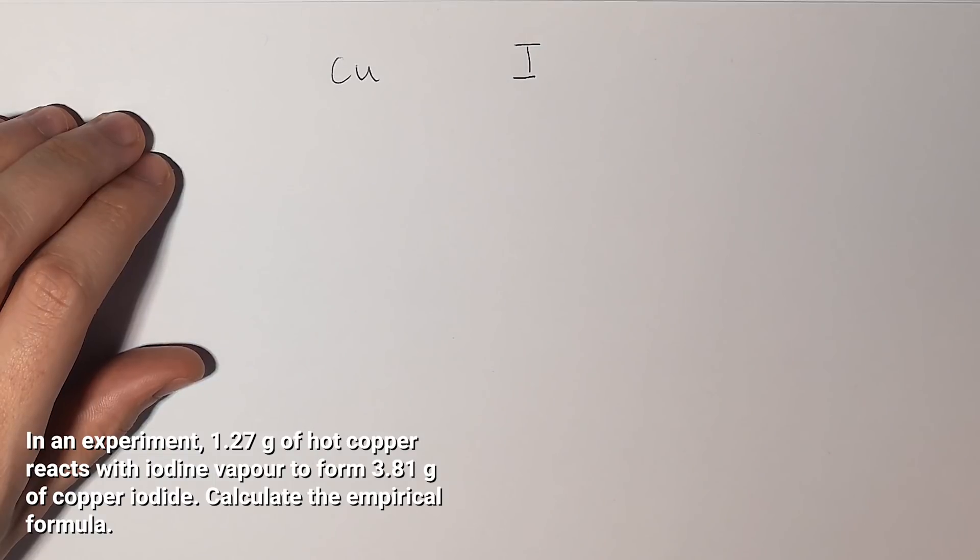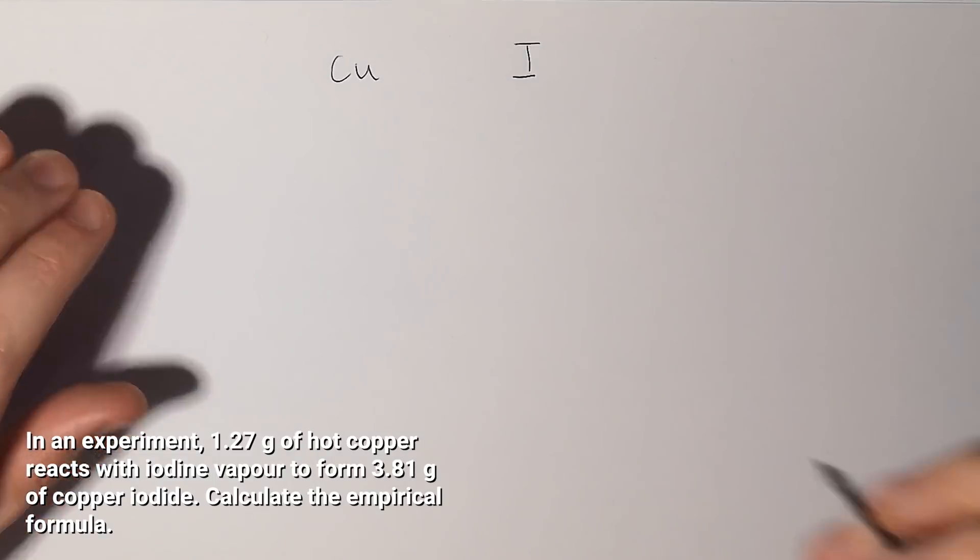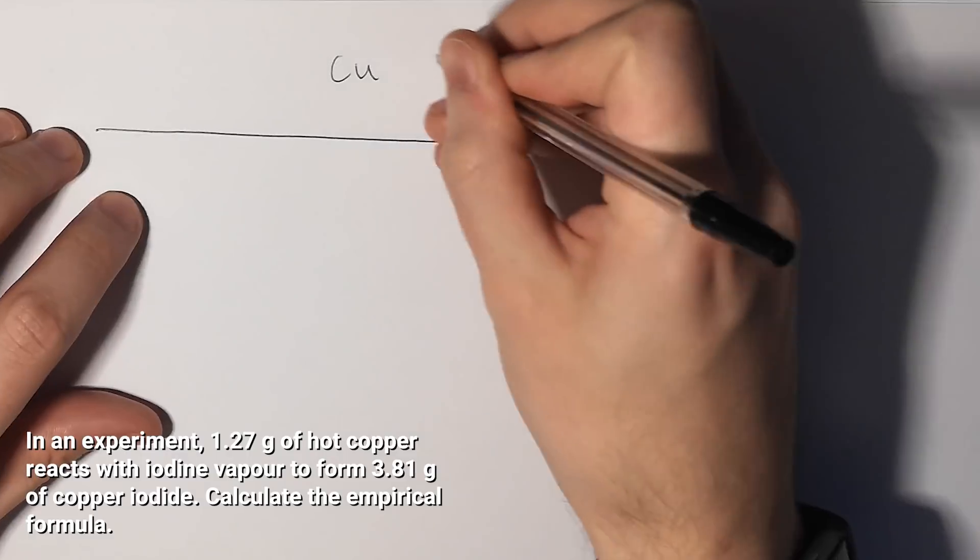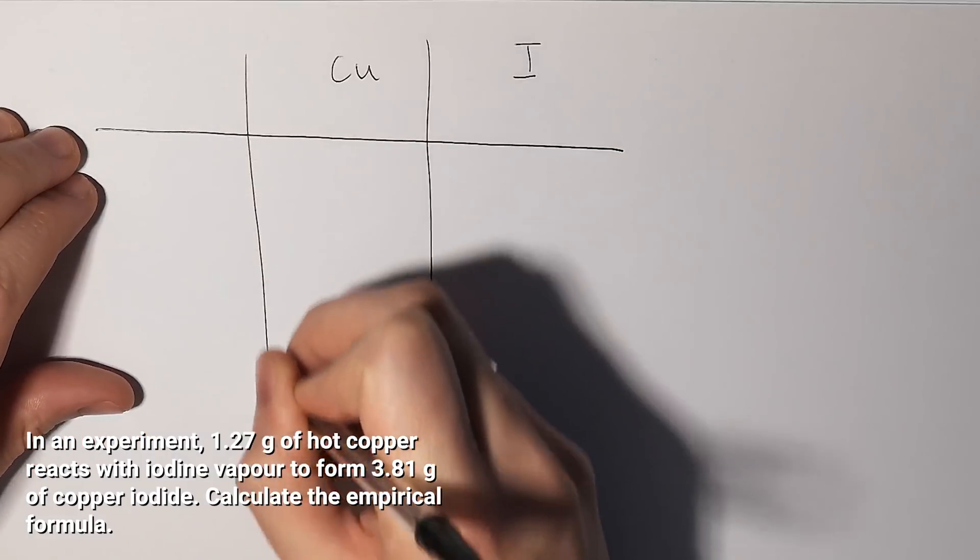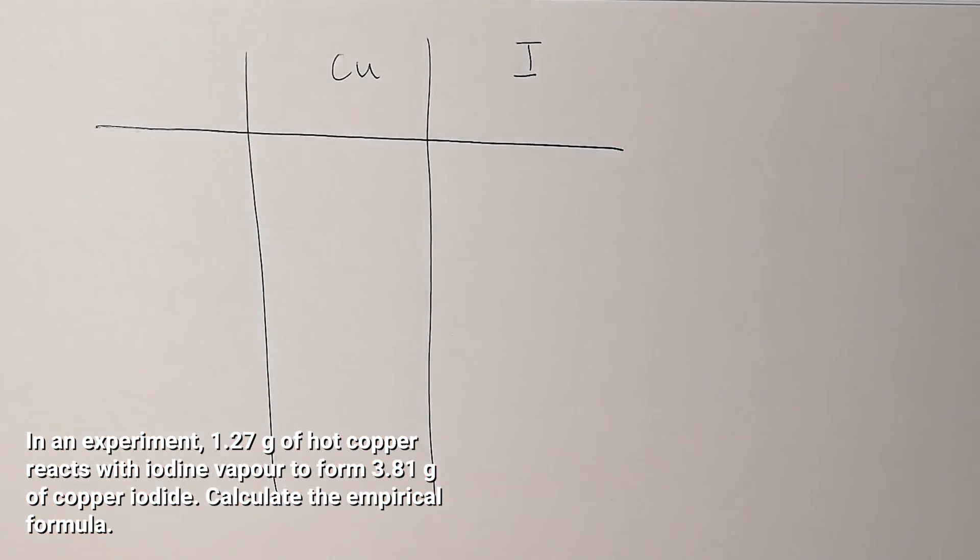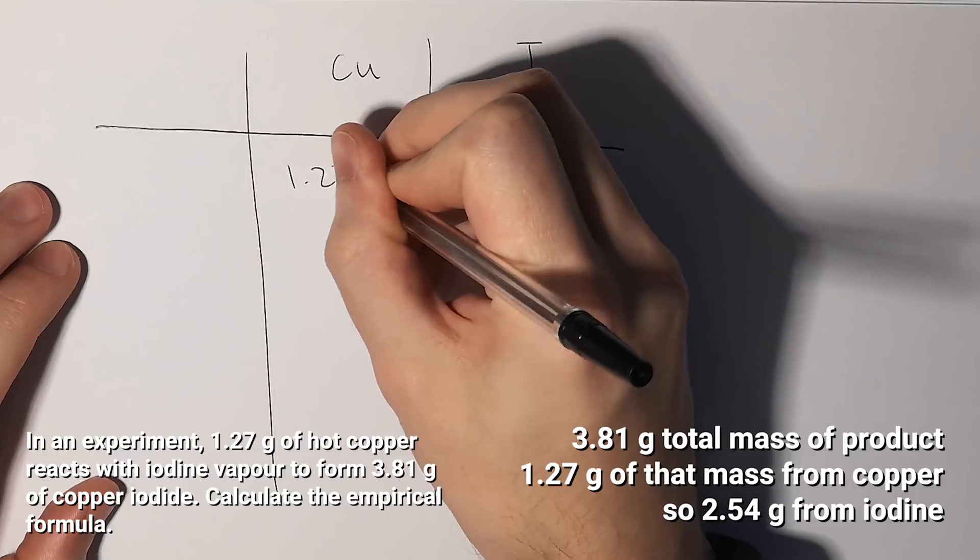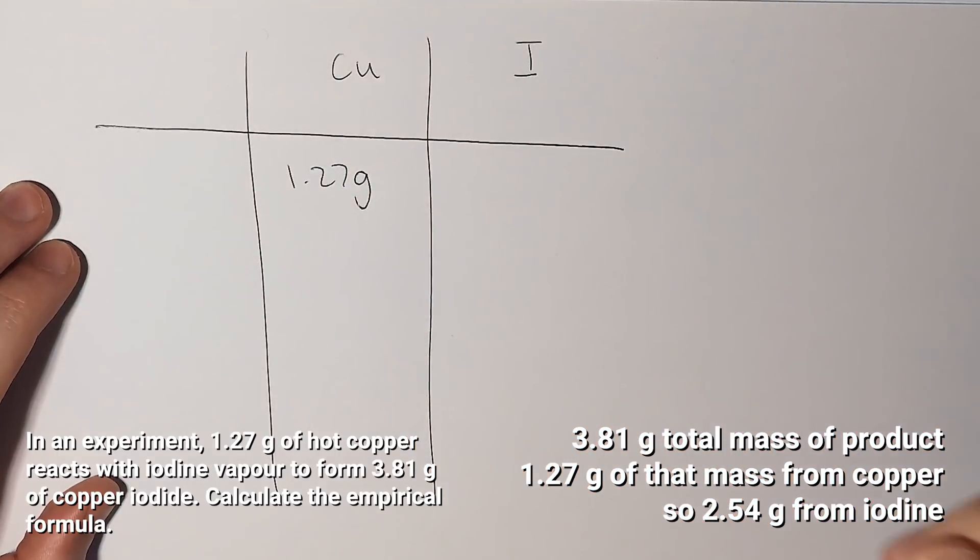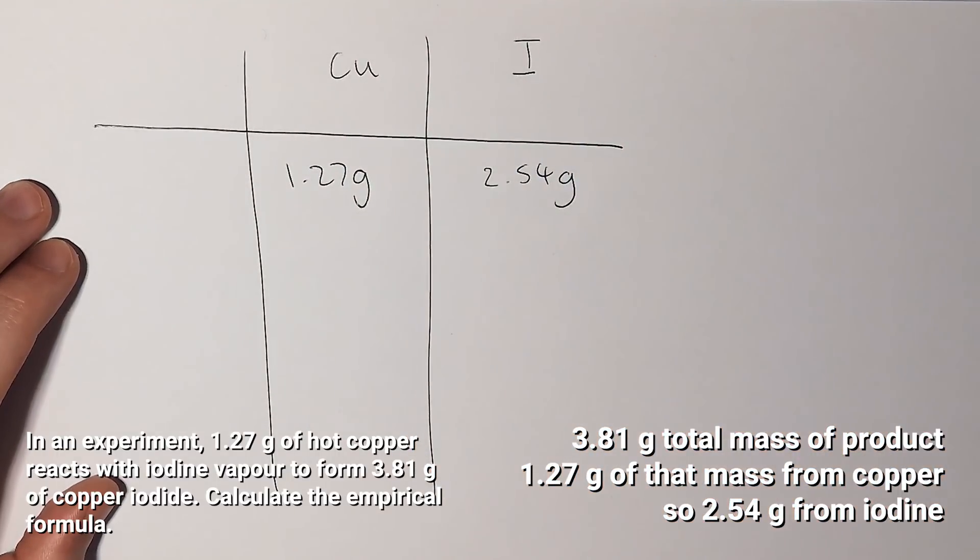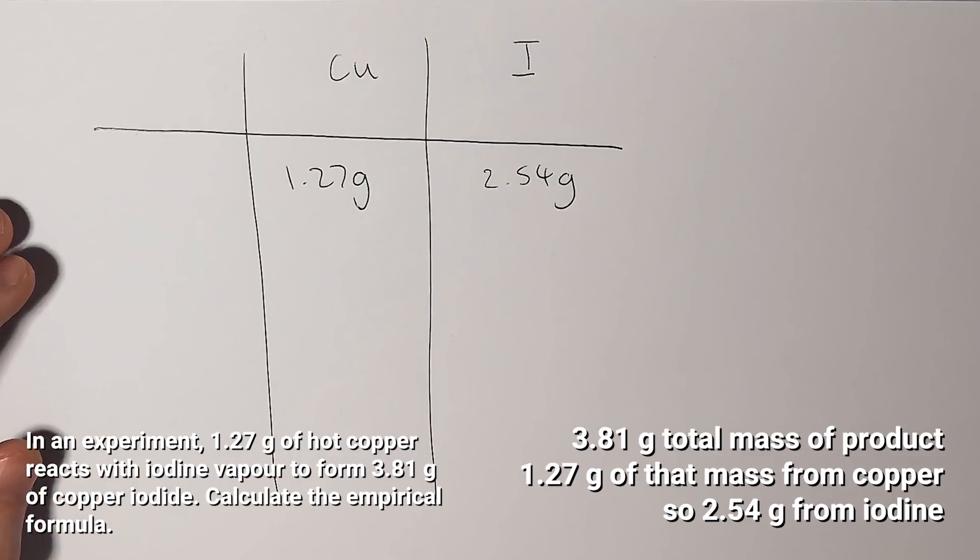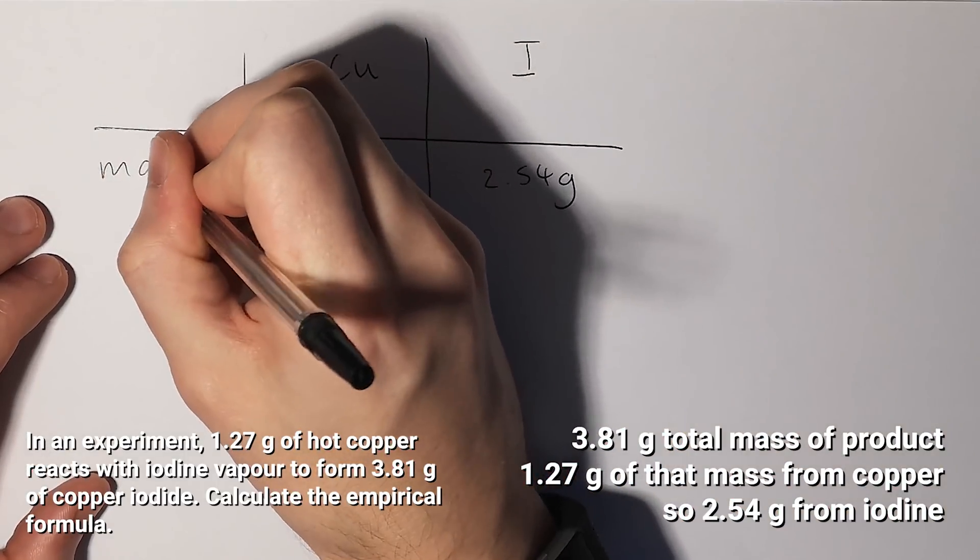Our first step is to write down the two different elements that are involved. I find the best way to do this is as a grid. During this experiment we were told that 1.27 grams of copper was reacted with 2.54 grams of iodine. So these are the masses.